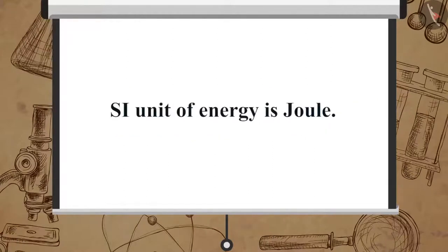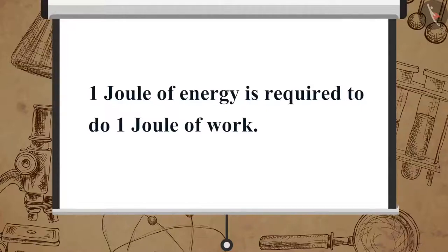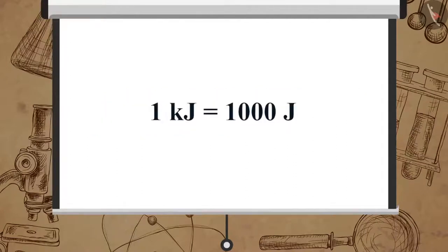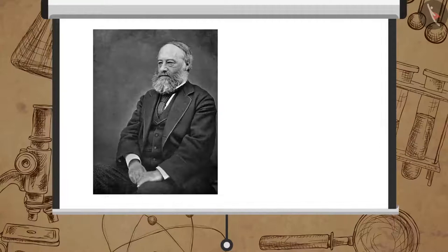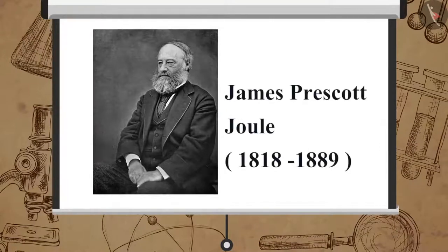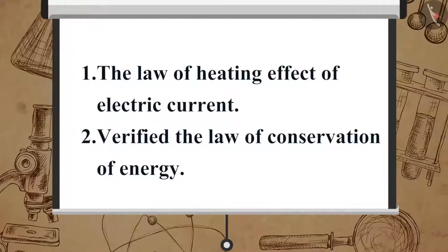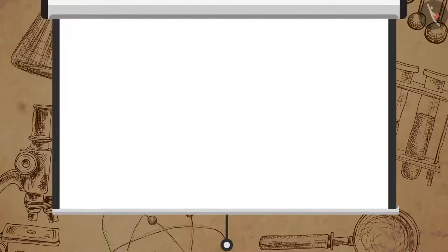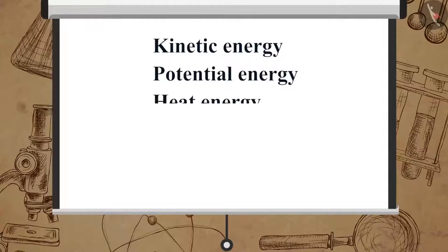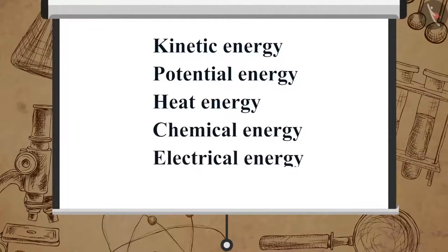The SI unit of energy is that of work, which is Joule. We can say one Joule of energy is required to do one Joule of work. Energy also has a larger unit: kilojoule — one kilojoule is equal to one thousand Joule. The unit of work and energy is named after a British physicist James Prescott Joule, who formulated the law of heating effect of electric current and verified the law of conservation of energy.